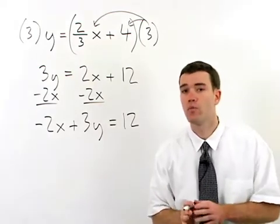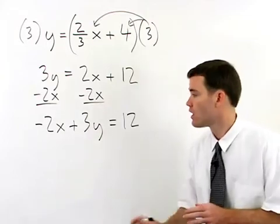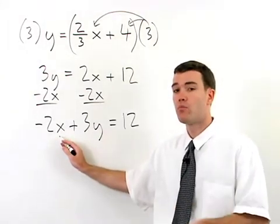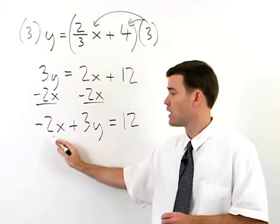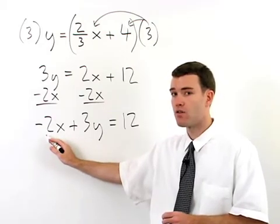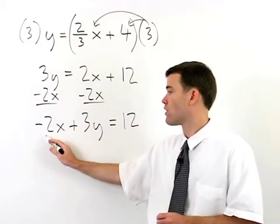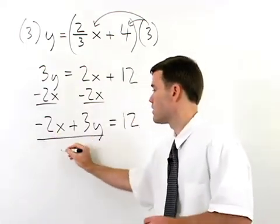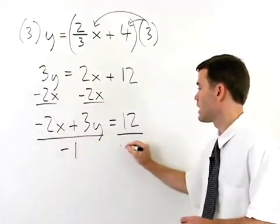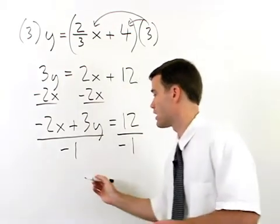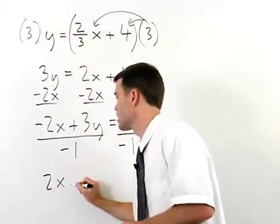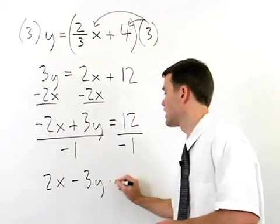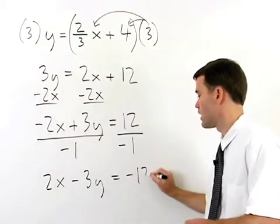Finally remember that in standard form the coefficient of the x term must be positive and in this case we have a negative coefficient. So our final step would be to divide both sides of the equation by negative 1 to get 2x minus 3y equals negative 12.